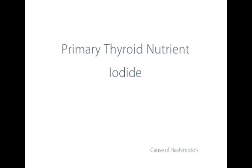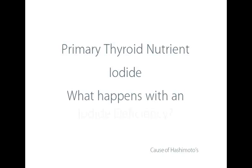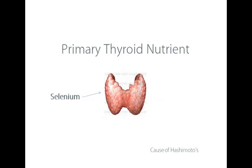With the foundation of the last presentation, this should be easy to understand. The primary nutrient which the thyroid cells require is iodide. What happens with an iodide deficiency — what goes on if the thyroid cells do not receive this primary nutrient? There are other nutrients also needed by the thyroid: selenium, zinc, and iron. But the primary one, and the one which people are most deficient in, is iodide.